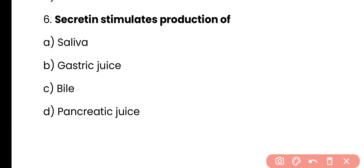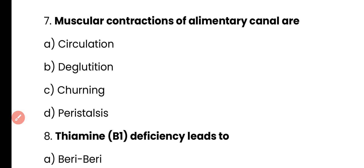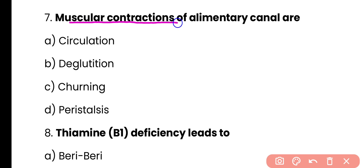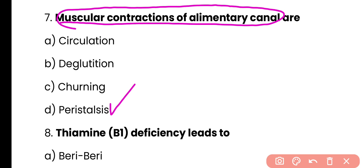Question 6: Secretin stimulates the production of — saliva, gastric juice, bile, or pancreatic juice. Correct answer is option D. Secretin hormone receptors are present on the pancreas, and it helps in the release of pancreatic juice from the pancreas. Question 7: Muscular contractions of the alimentary canal are — circulation, deglutition, churning, or peristalsis. Correct answer is option D — muscular contractions of the alimentary canal are known as peristalsis.